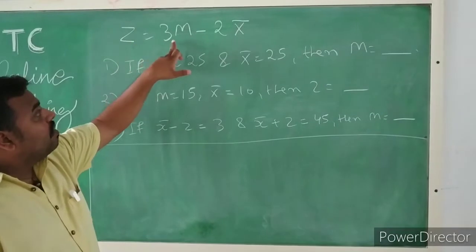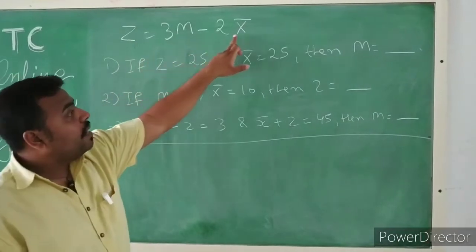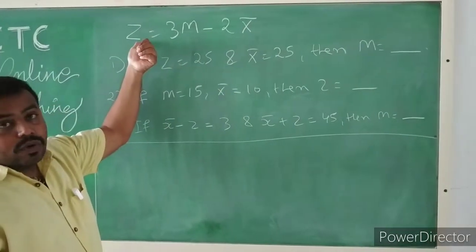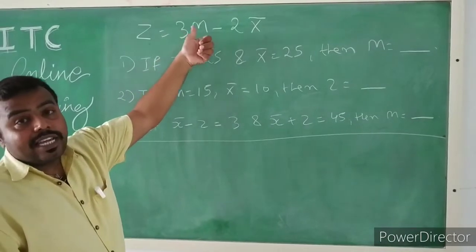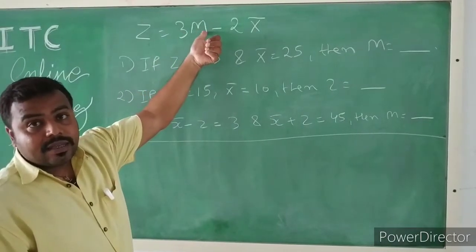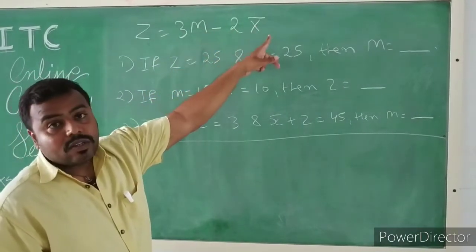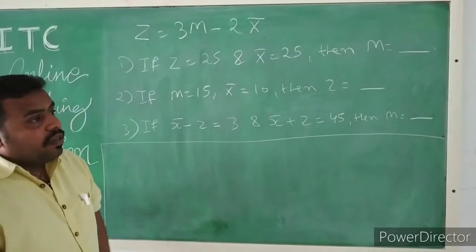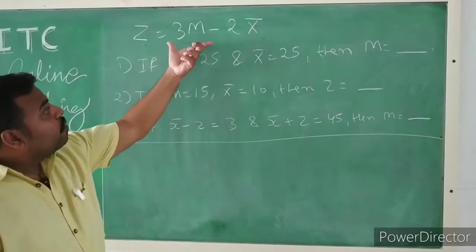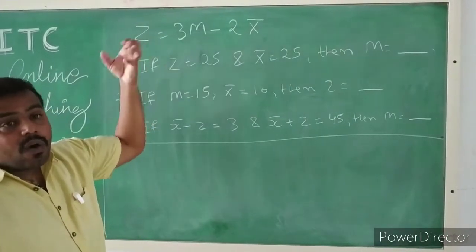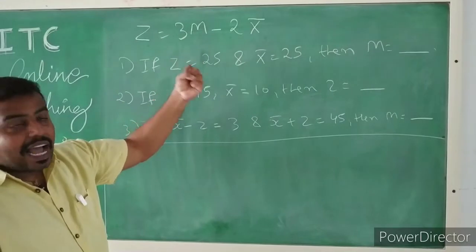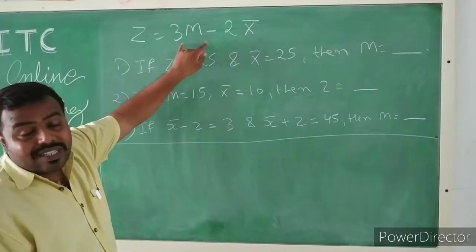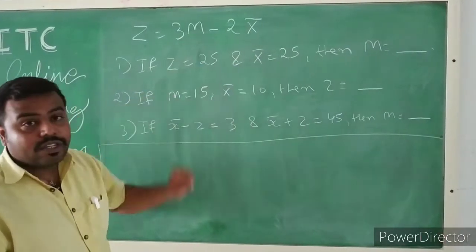Z is equal to 3M minus 2x̄, that is Z means mode, equal to thrice of median (M) minus twice of x̄ (mean). Now you have to learn this formula. Now how questions are asked — we will be using this formula to solve such questions.